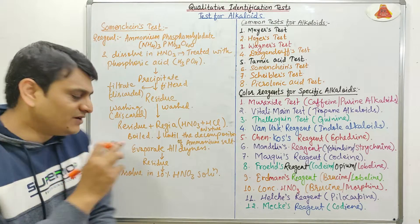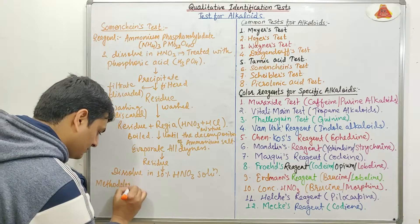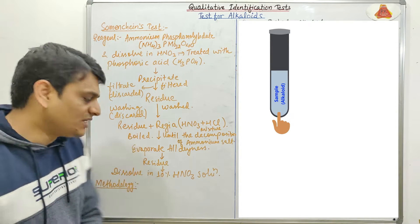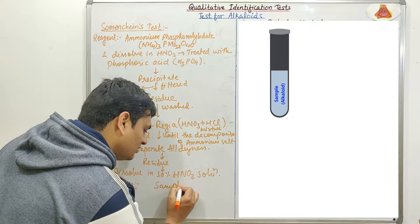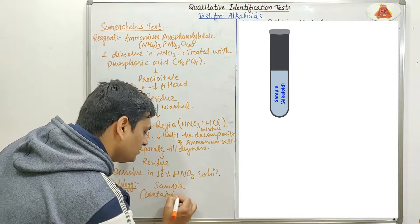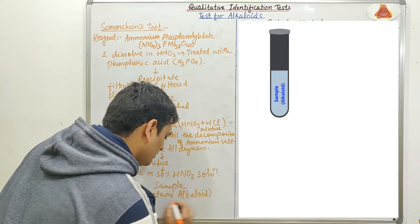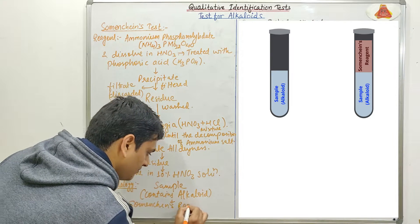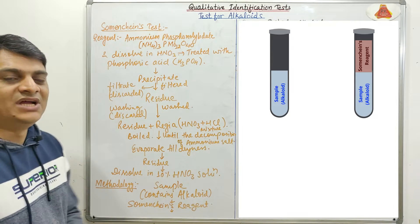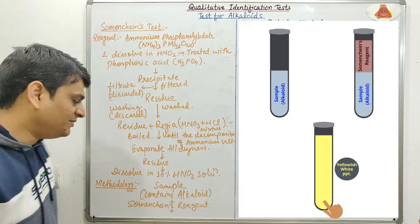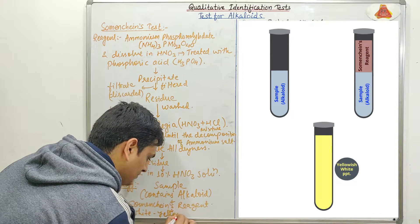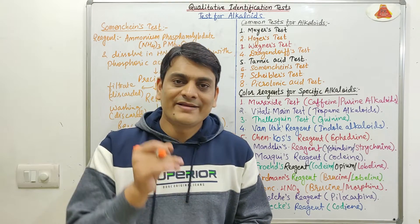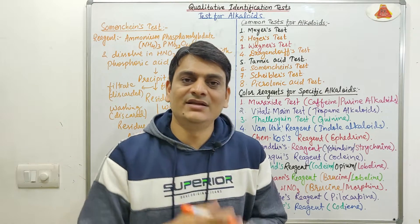Now, coming to the methodology for this test. First, we will take the sample which contains alkaloid or alkaloids. We will add the Soman Chin's reagent which is prepared here. And after that, we will get a white yellowish precipitate. If we are getting a white yellowish precipitate, then alkaloid or alkaloids will be present in our sample.